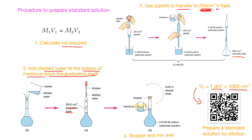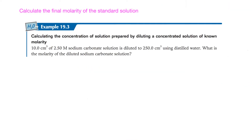You can scan the QR code right there to see how people prepare a standard solution by diluting a concentrated one. After you do the process, remember you have to calculate the final molarity of the standard solution as well. Normally it will be the same because you use a very accurate pipette to measure the required volume. Here, this is the volume, and this is the molarity it is diluted to.